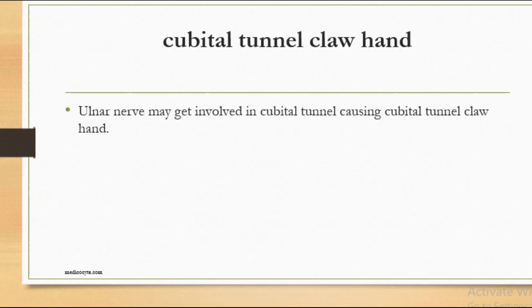Cubital tunnel claw hand: the ulnar nerve gets involved in the cubital tunnel, causing cubital tunnel claw hand. These are other sites of injury of the ulnar nerve.